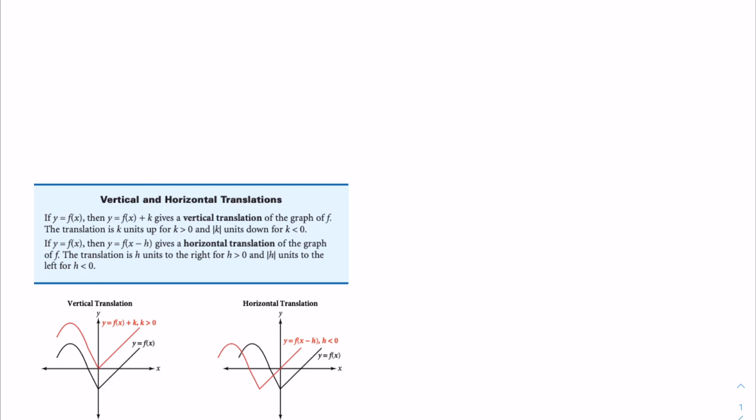On the graph you can see that a vertical translation moves the entire graph untouched up or down, and the horizontal translation moves the graph left and right.